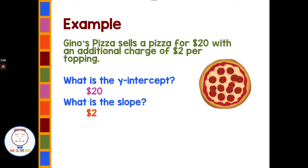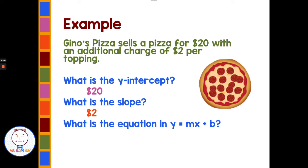Putting this into slope-intercept form y equals mx plus b, we replace m with the slope of 2 and b with the y-intercept of 20. So the situation is represented by y equals 2x plus 20. How much would it cost with one topping? 2 times 1 is 2, plus 20 is $22. With three toppings: 2 times 3 is $6, plus 20, the pizza would cost $26. That's what slope-intercept form and writing an equation in slope-intercept form looks like.